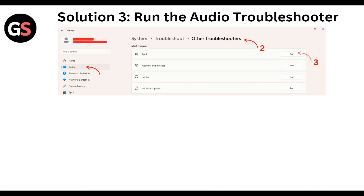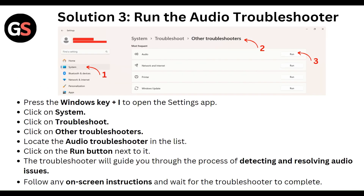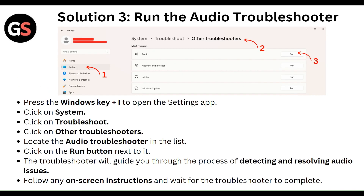Then run the Audio Troubleshooter. Press Windows plus I to open the Settings app. In Settings, click on System, then Troubleshoot, then Other Troubleshooters, then Audio Troubleshooter, and click the Run button next to it. The troubleshooter will guide you through detecting and resolving audio issues. Follow the on-screen instructions and wait for the troubleshooter to complete.